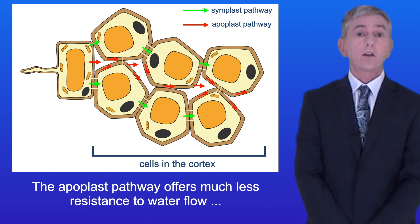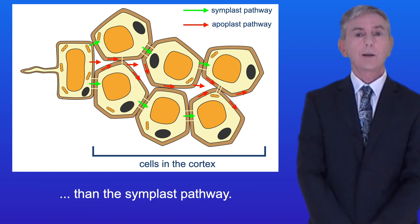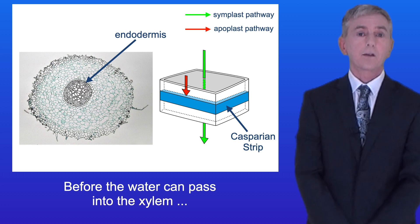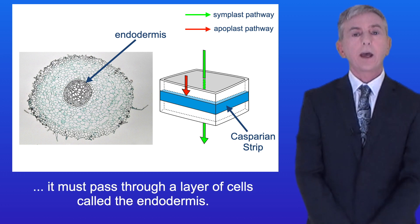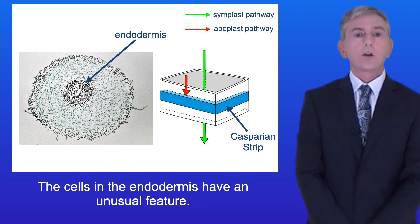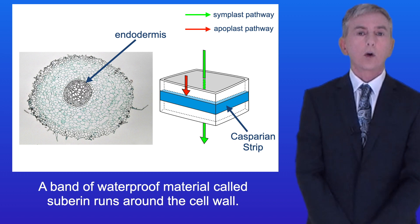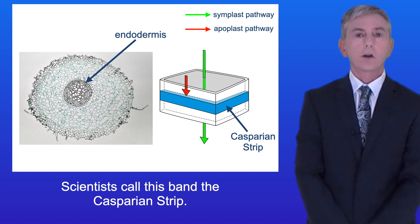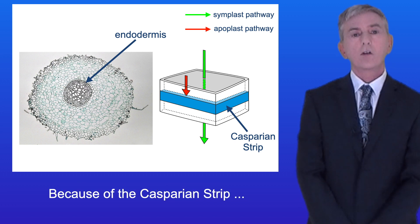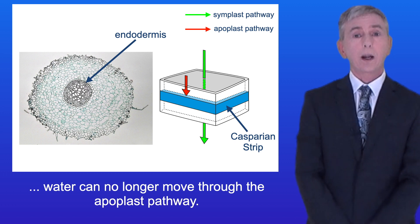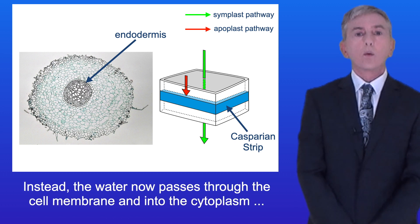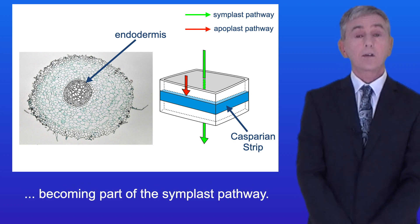The Apoplast pathway offers much less resistance to water flow than the Simplast pathway. Before the water can pass into the xylem, it must pass through a layer of cells called the endodermis. The cells in the endodermis have an unusual feature: a band of waterproof material called suberin runs around the cell wall, and scientists call this band the Casparian strip. Because of the Casparian strip, water can no longer move through the Apoplast pathway. Instead, the water now passes through the cell membrane and into the cytoplasm, becoming part of the Simplast pathway.